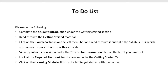Here's a to-do list of what you need to do to get started. First, complete the student introduction under Getting Started. Then read through the Getting Started material. Next, click on the course syllabus on the left menu bar, read through it, and take the syllabus quiz — you can use that in place of one of your module quizzes, and it's a lot easier than those will be. You also need to view the introduction video under Instructor Information, do the discussion under the Getting Started tab, look at the required textbook, and click on the learning modules on the left to see how the course works. That concludes our introduction video. Thank you.